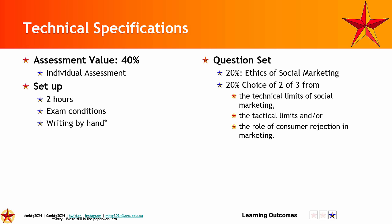Your questions are two from three: the technical limits, the tactical limits, or the role of consumer rejection. The consumer has the right to say no — what does that do to limit the effectiveness of social marketing? If you're sitting there thinking that's the question — yes, that's why you've got a whole semester to get your head around it, because that's going to be one of the good ones.